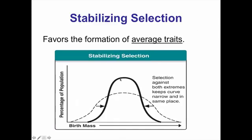Stabilizing selection stabilizes the average, basically. When we look here, we have the percentage of the population. We have birth mass here. Basically, you could think about birth weight.